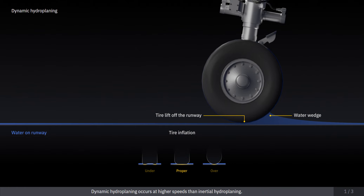Dynamic hydroplaning occurs at higher speeds than inertial hydroplaning. There are several ways to prevent dynamic hydroplaning, including keeping the tires inflated and reducing speed.